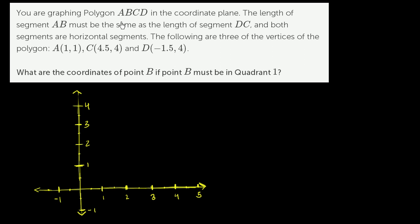You are graphing polygon ABCD in the coordinate plane. The length of segment AB must be the same as the length of segment DC, and both segments are horizontal segments. The following are three of the vertices of the polygon.